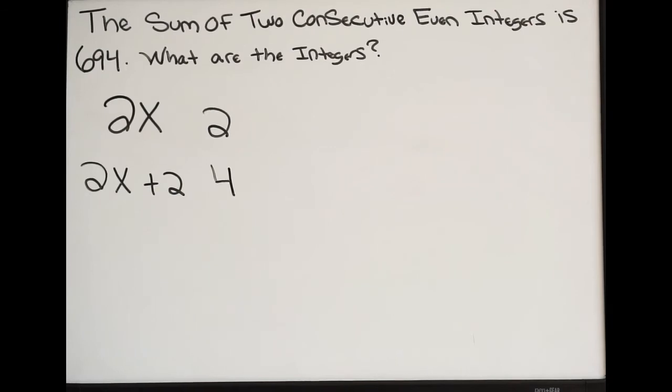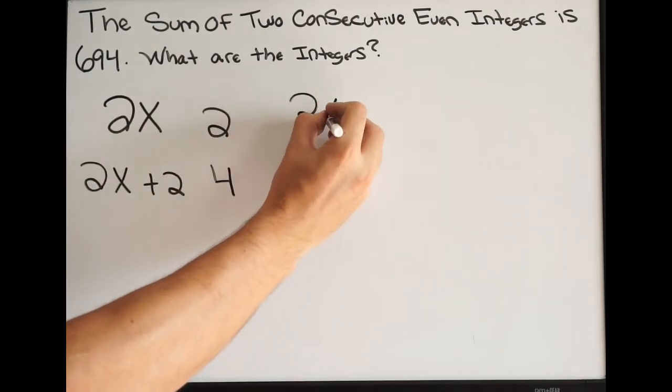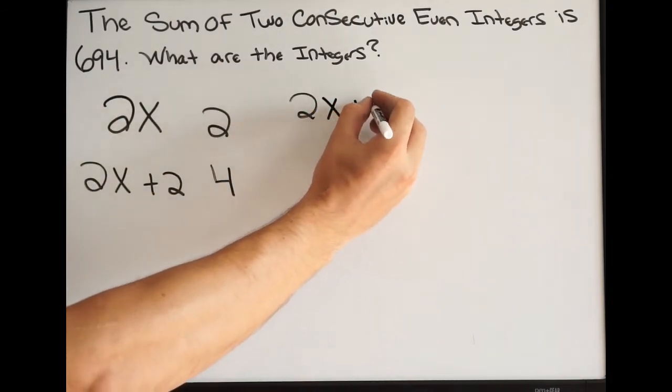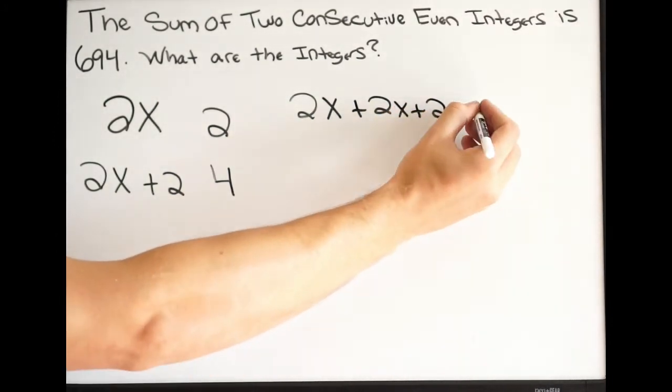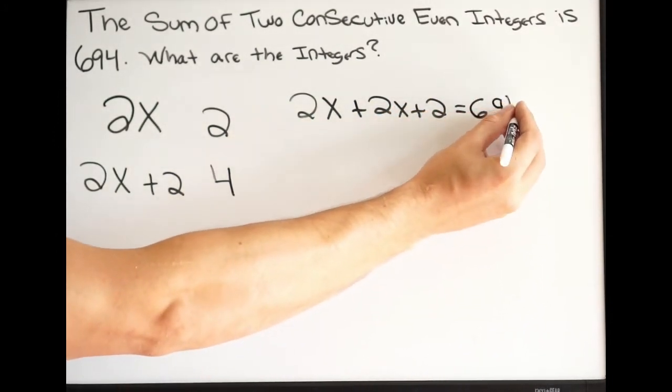Alright, so what we want to do now is simply add these up and set it equal to 694. So I'm going to do 2x plus 2x plus 2 equal to 694.